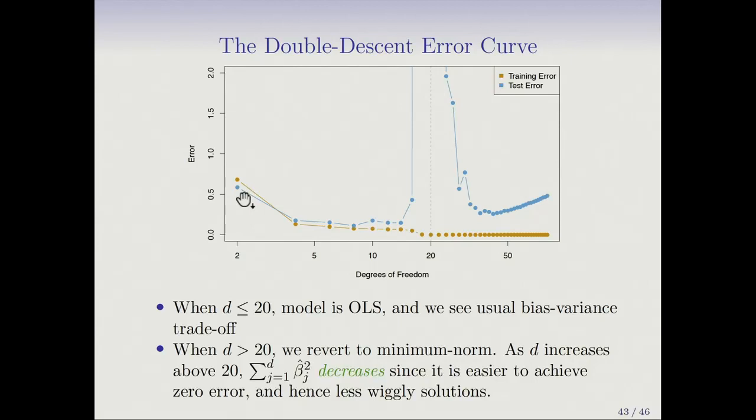The test error is what is interesting here. It initially drops and then starts increasing as we start overfitting the training data. This part shows the usual bias-variance trade-off: initially error is high because of bias, drops down, then starts increasing because of variance and literally shoots through the ceiling. But then something interesting happens — the error starts decreasing again. This is the double descent.